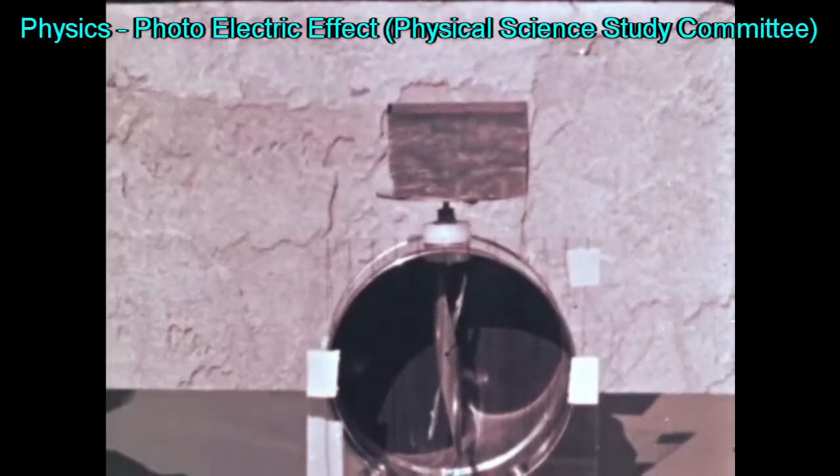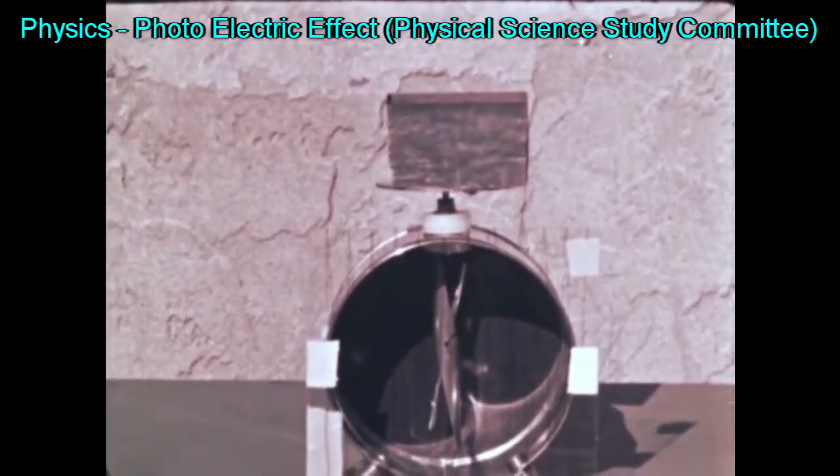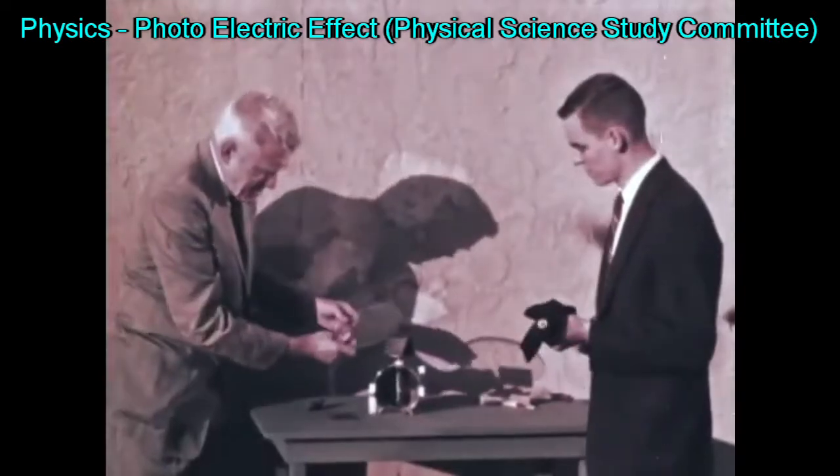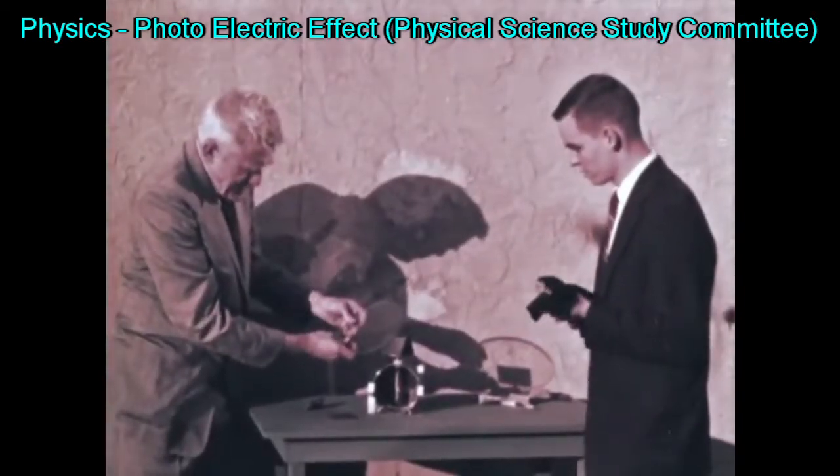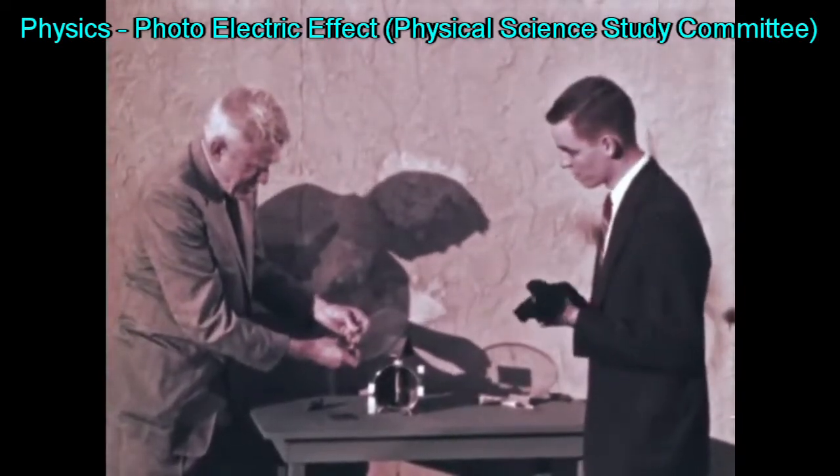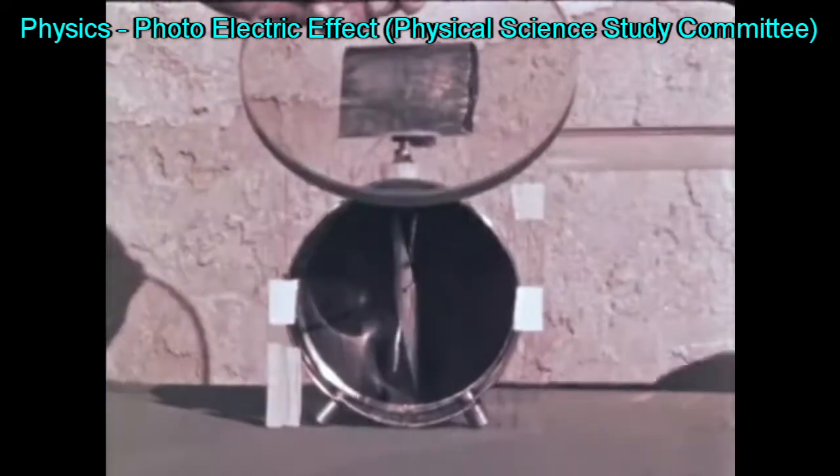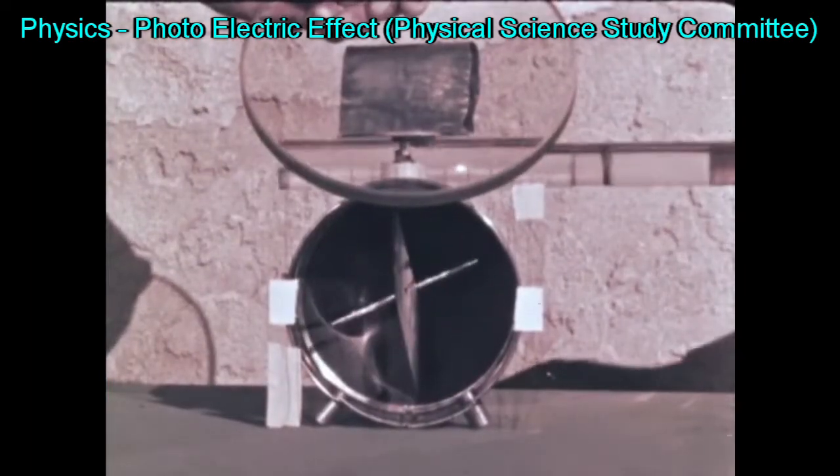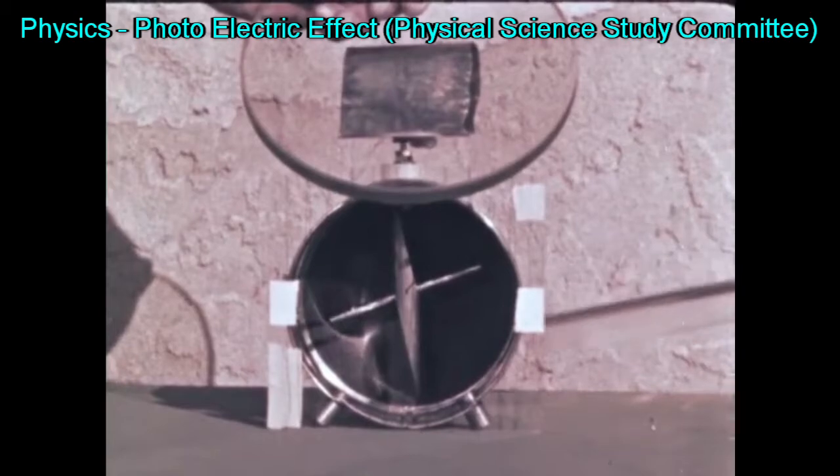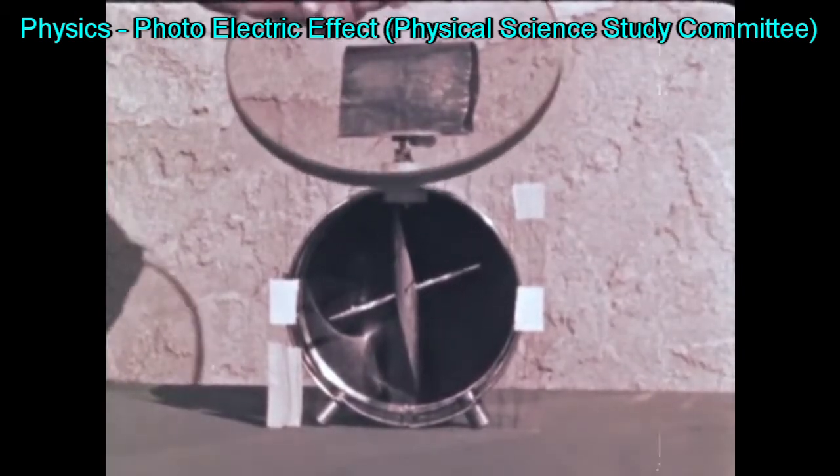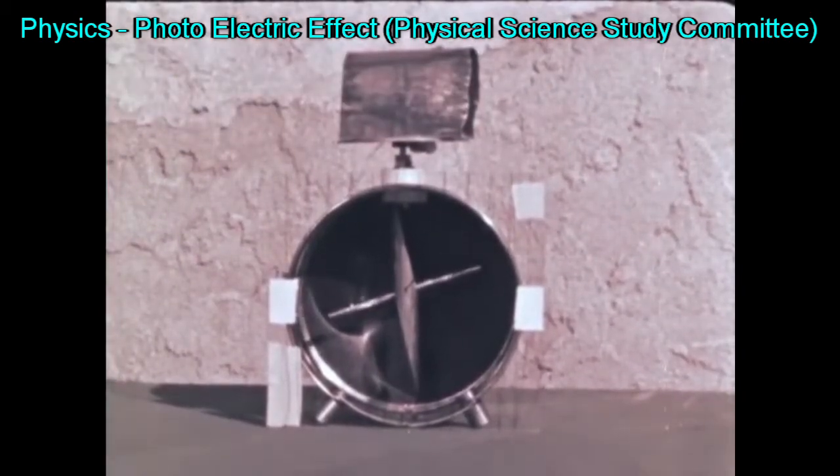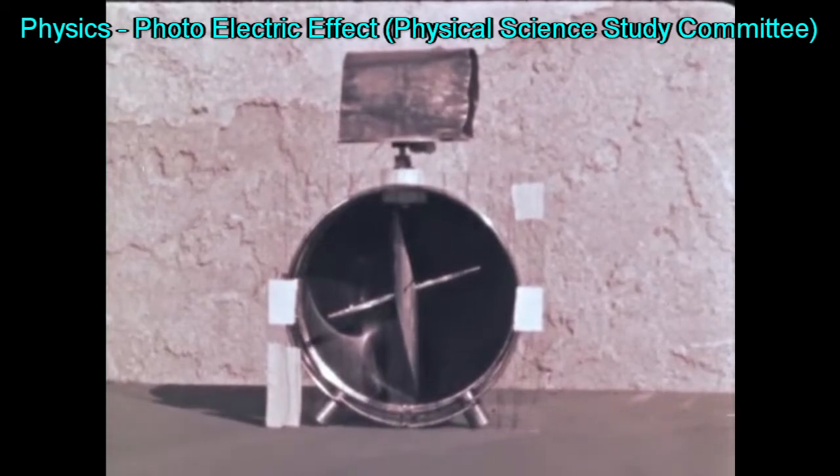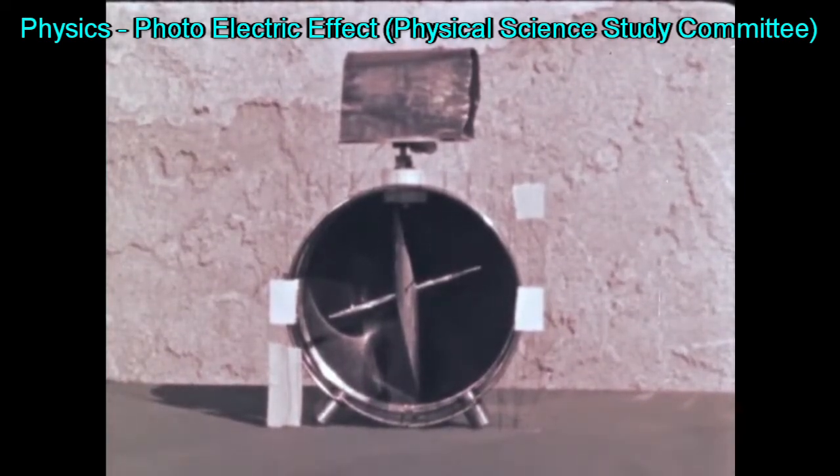And of course, when I touch the electroscope, that discharges it. If you'll give me the piece of glass and charge it negatively, I'll hold this glass in front of the lead. And there we have a charge. Now I remove the glass. And we see that the electroscope isn't discharging.